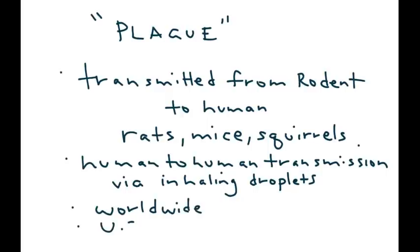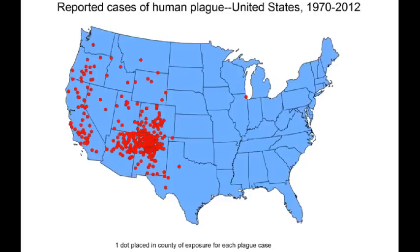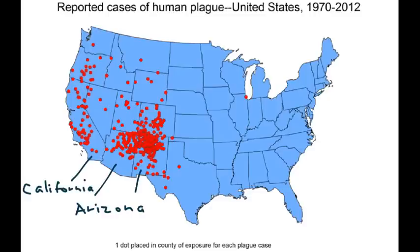Plague can occur worldwide, and in particular in the United States it is endemic to a region in the southwest. Here is a map of the United States showing the areas with the most cases of plague. The states include Arizona, California, and New Mexico, which seems to have the largest cluster.